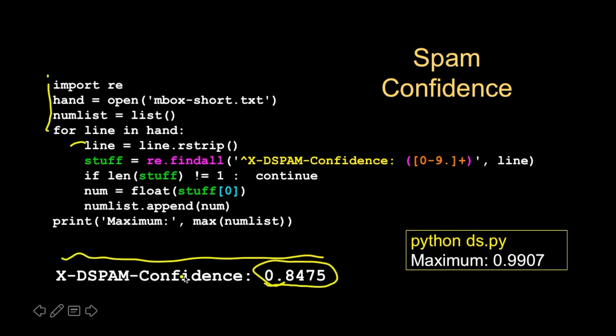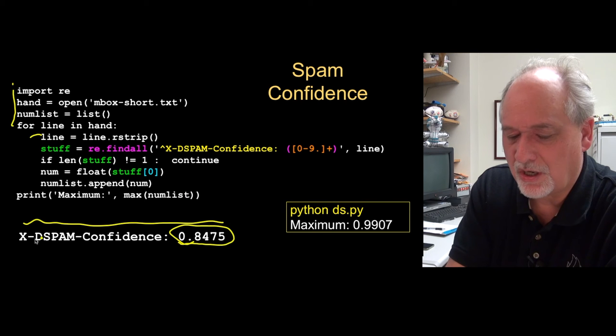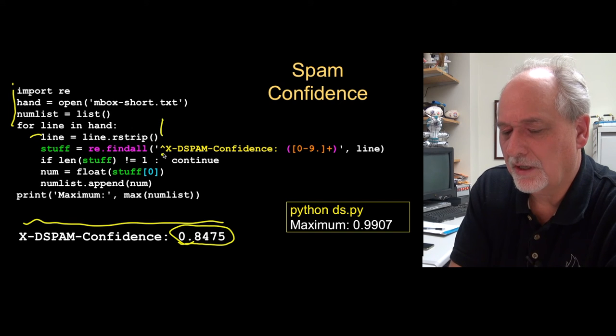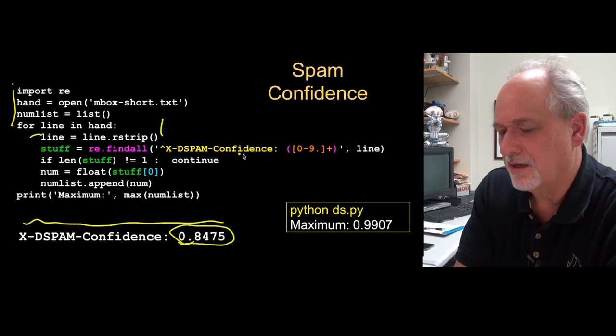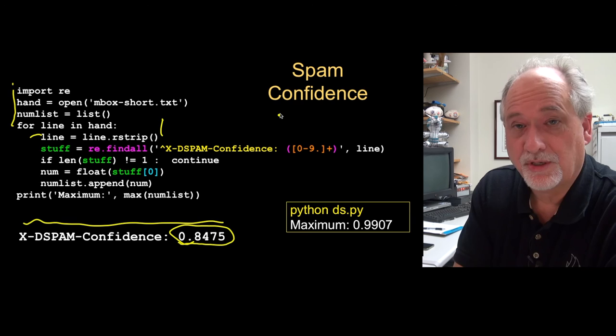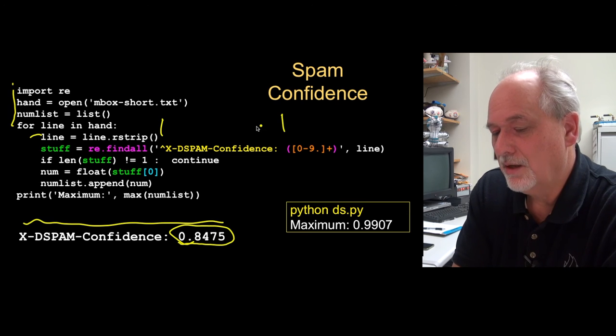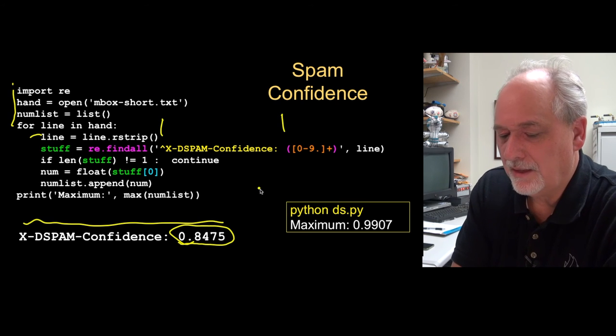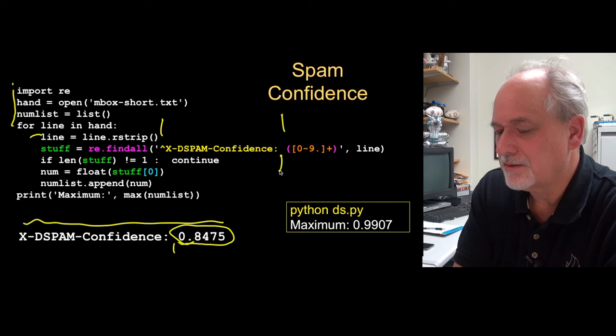But the first thing we want to do is not get line, we want to discard all the lines except ones that have this. So our regular expression is look for lines that start with x dash d spam dash confidence colon. So that's a pretty strong match. If that's not there, we're not going to get anything. And then there's a space, there's a space, and then start extracting, and then go as long, one or more digits and dots, that's a single character, and that's one or more, and then stop extracting. So that says start extracting, greedy, greedy, greedy, greedy, stop extracting. And so that's what we're going to get.